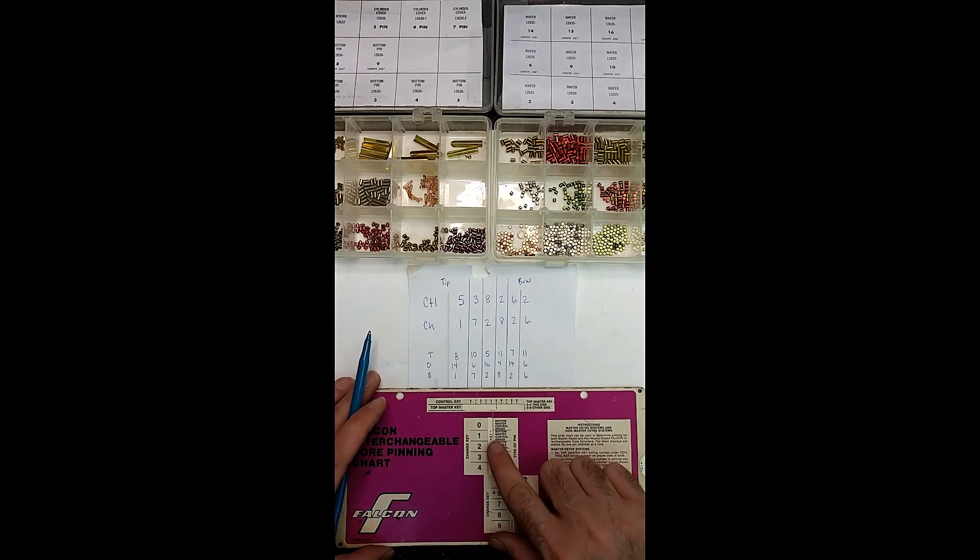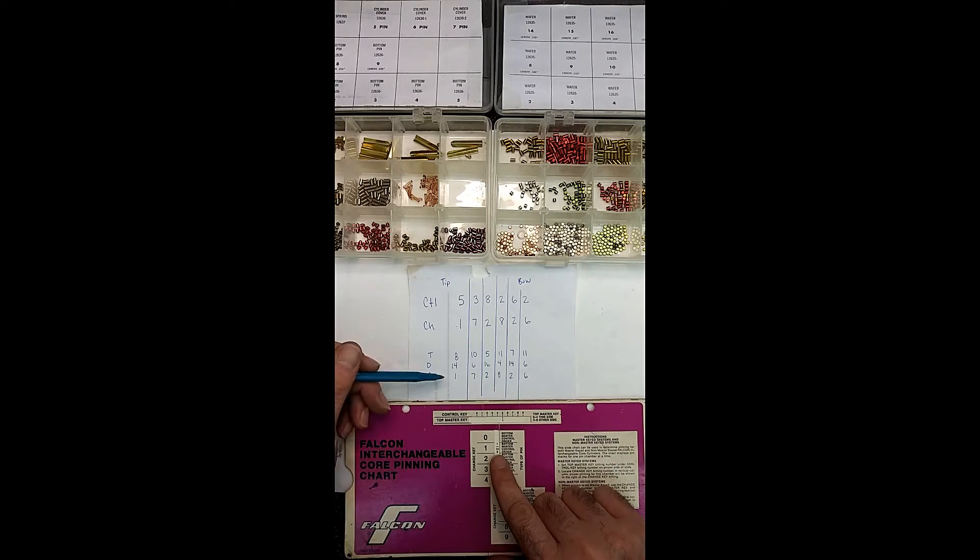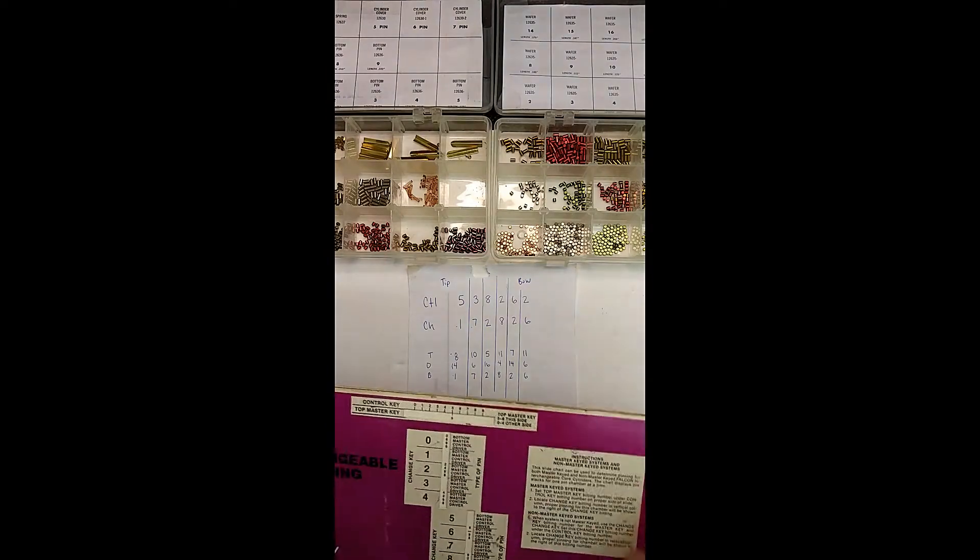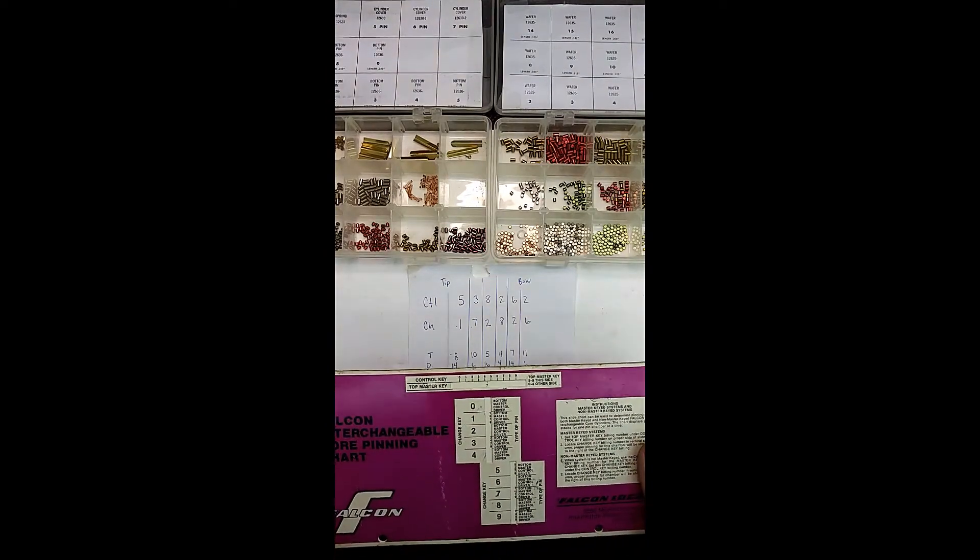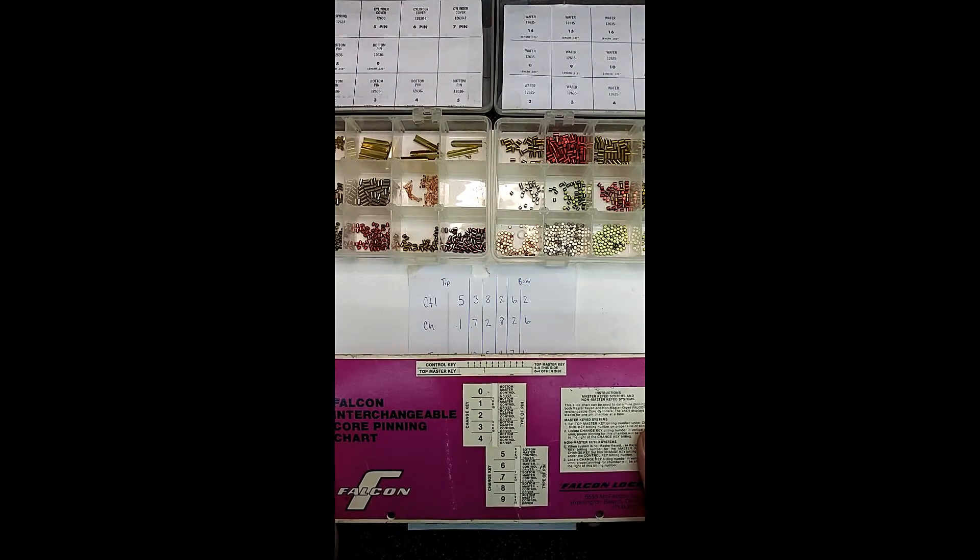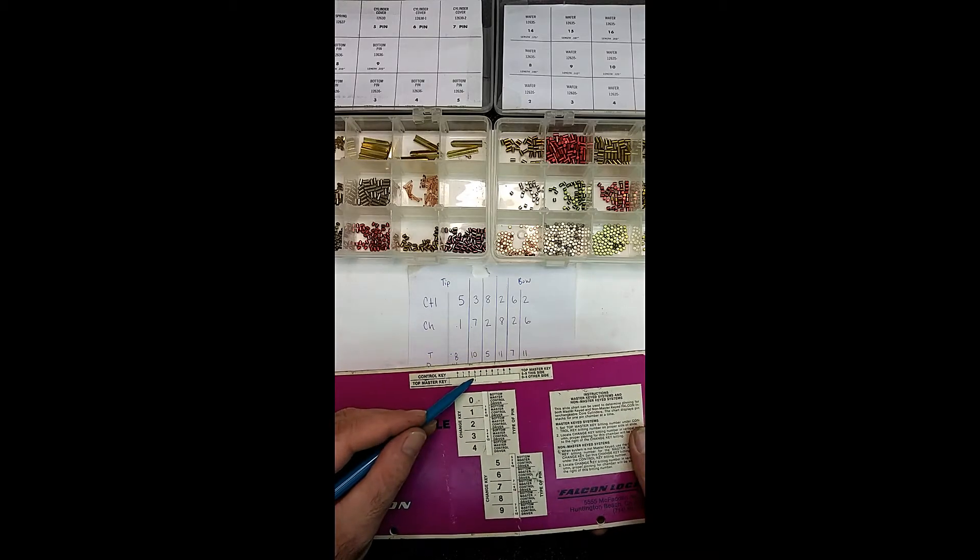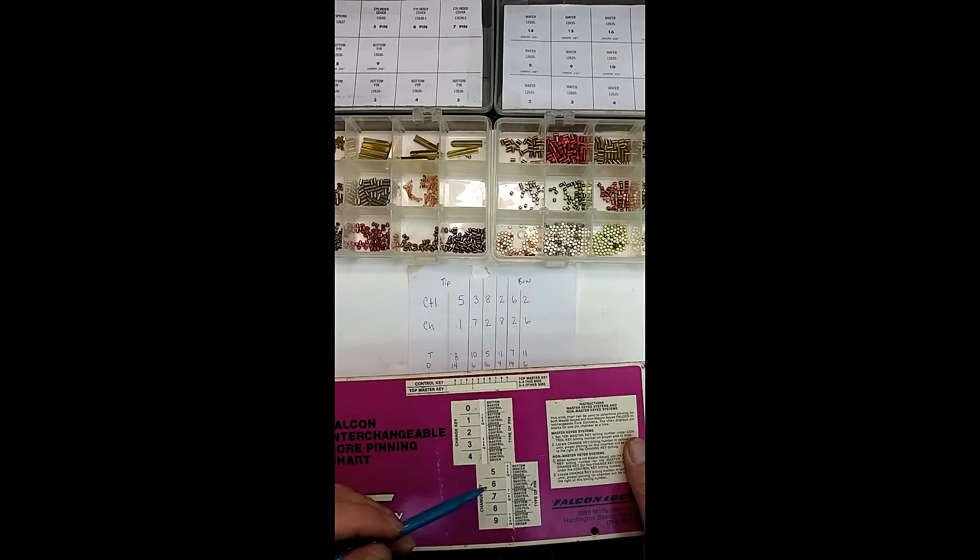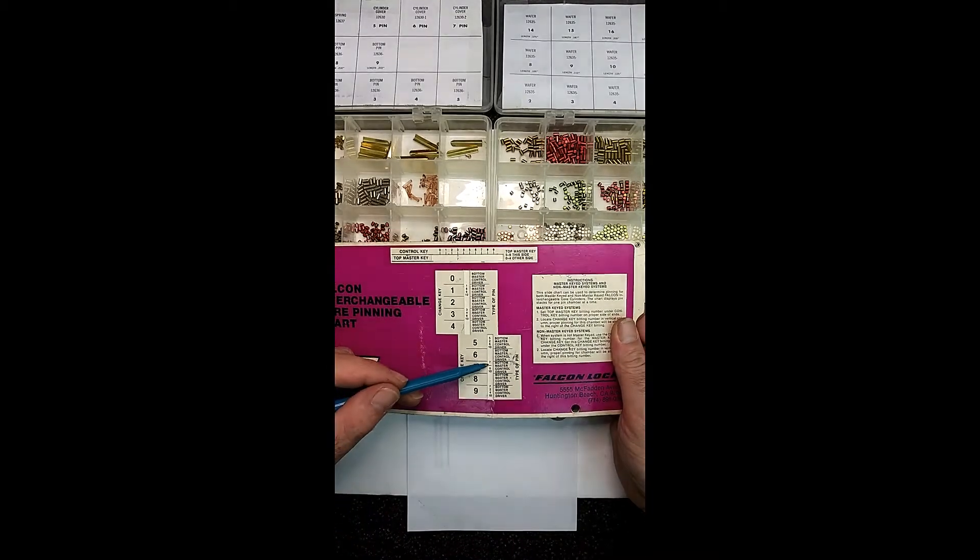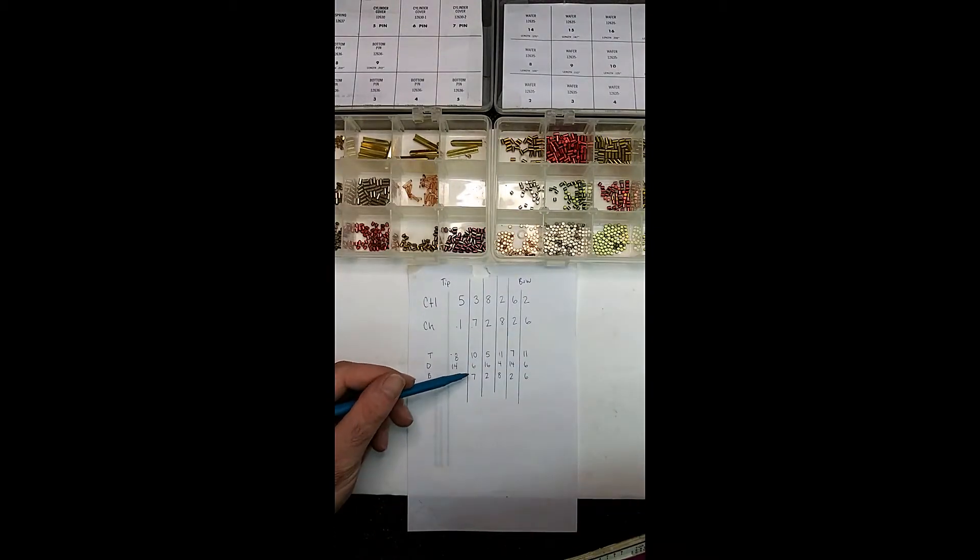So we got a one. Now they say down here, your change key. So in this case, it is a one. So we have a one, fourteen, and an eight. The next one would be a three and a seven. And I won't go through all of these. It's pretty self-explanatory once you know what you're doing. But a three and a seven. You go down to the seven. So we got a seven, six, and ten.